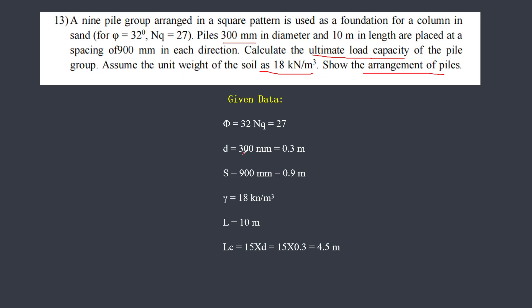The given data: φ is given, Nq is given, D is given in mm and I have converted it to meters. Spacing of the pile is given — I will explain spacing later — and I have converted it to meters. γ is given. L, the length of the pile, is given. LC is the critical depth; LC equals 15 times the diameter, that is 15 × 0.3 = 4.5 m.